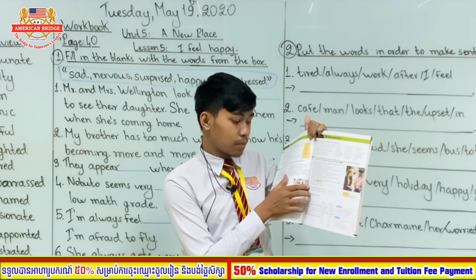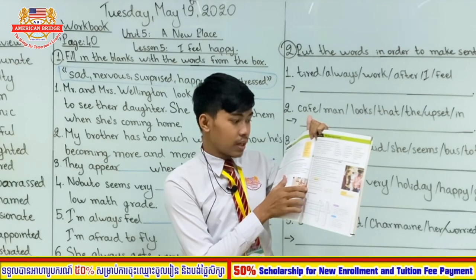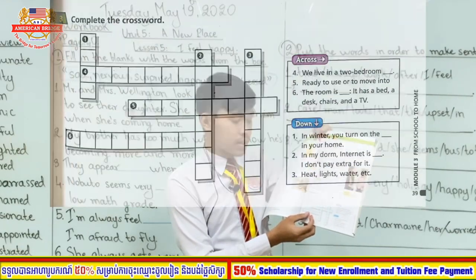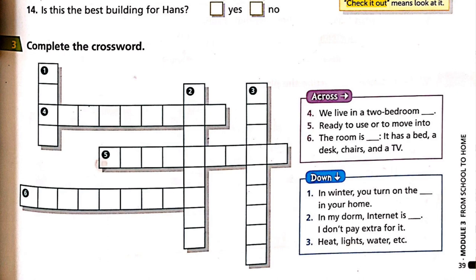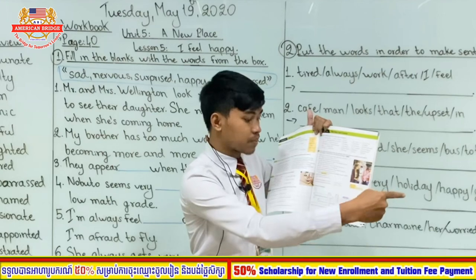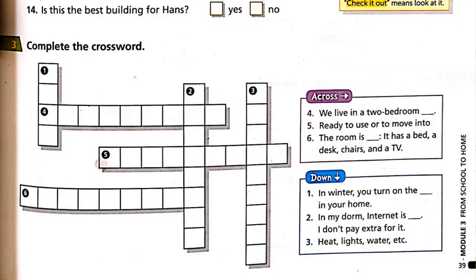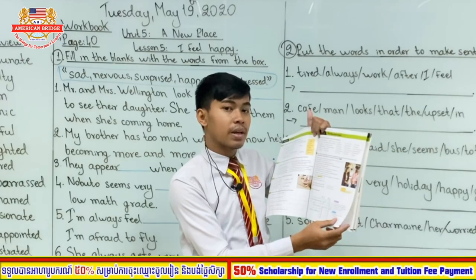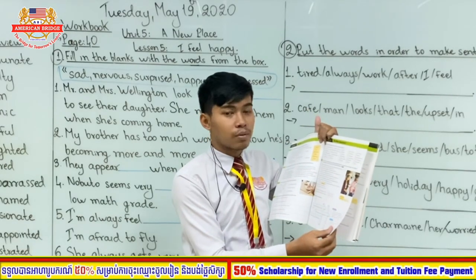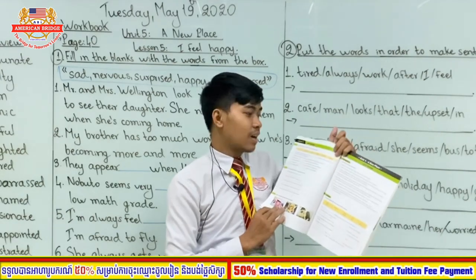Now I'm sure you have listened to the listening for exercise two. Don't forget to answer questions 13 and 14. Let's go to exercise three: complete the crossword. There are six words you need to complete. Down means from top to bottom; across means horizontal. Read the clues and find the words — all of those words are ones you have already learned.